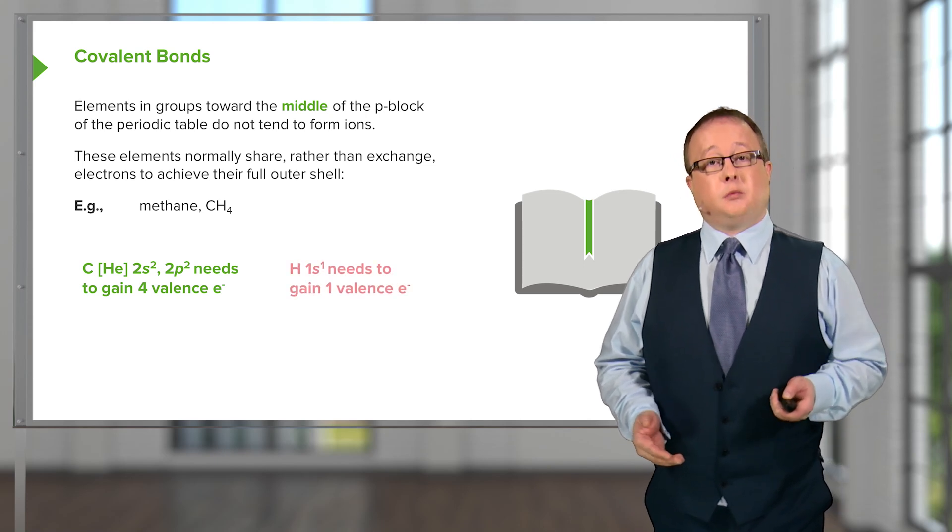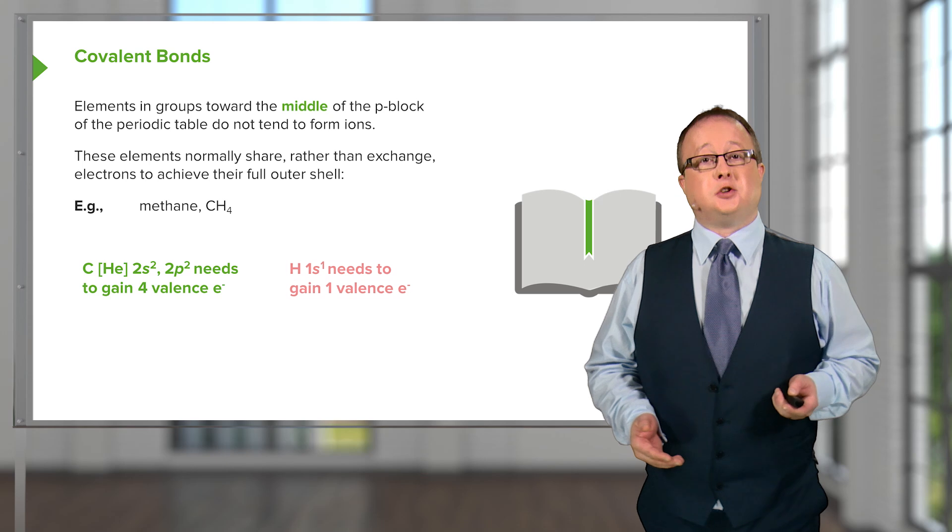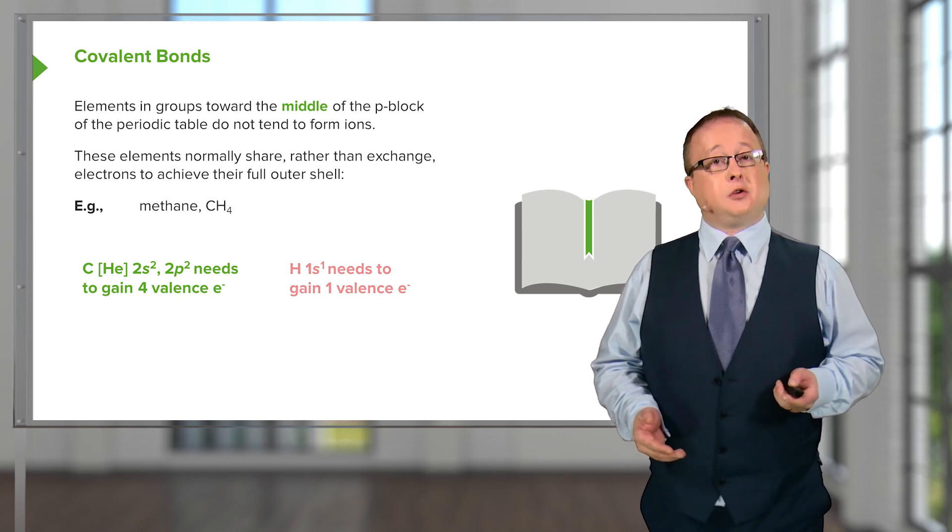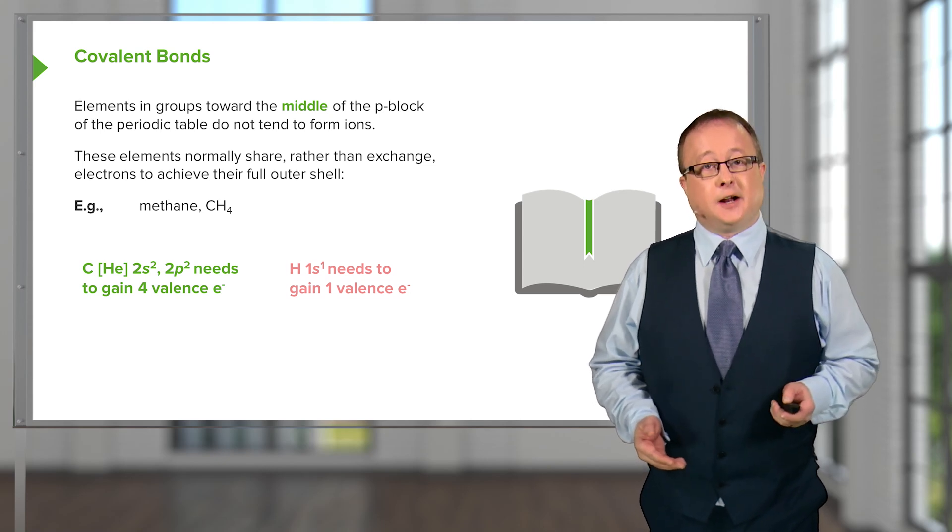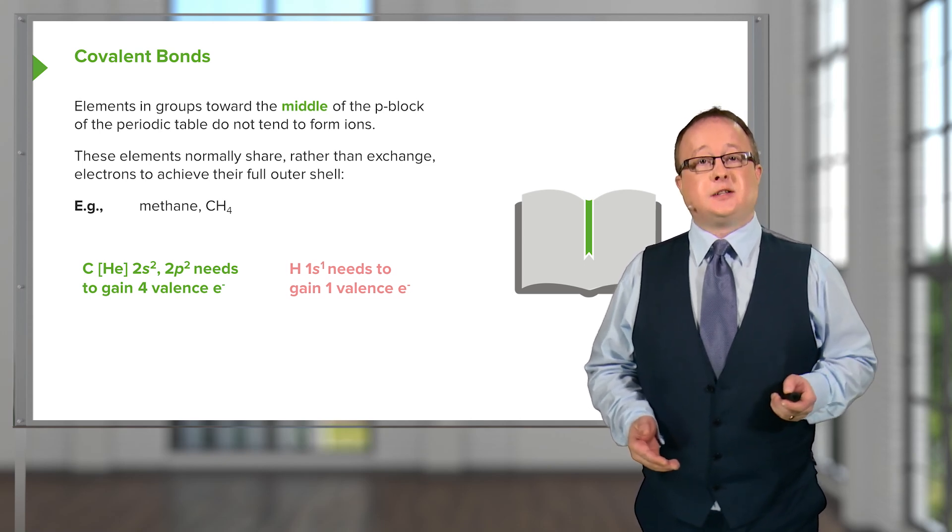If on the other hand we look at hydrogen, which as you should recall has the electron configuration 1s1, it needs to gain one additional valence electron in order to complete its outer shell.